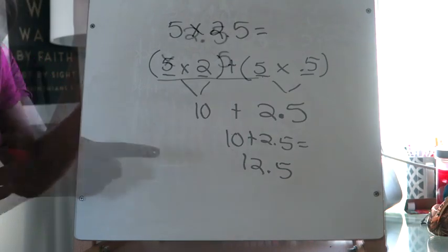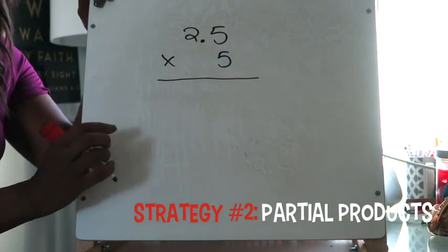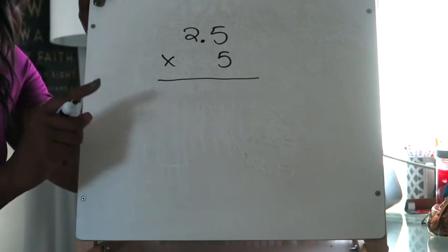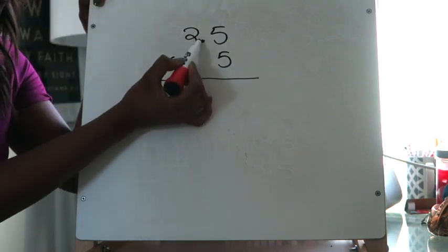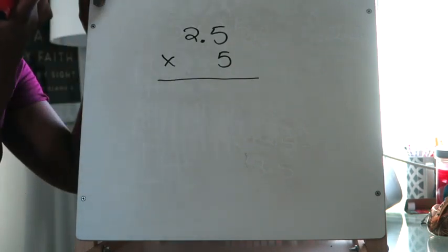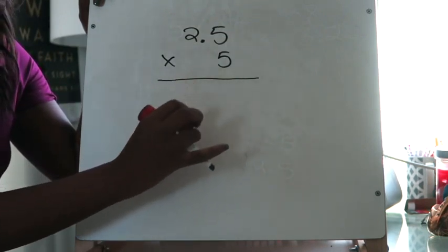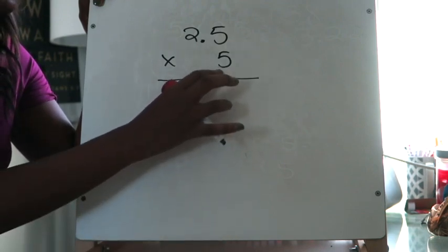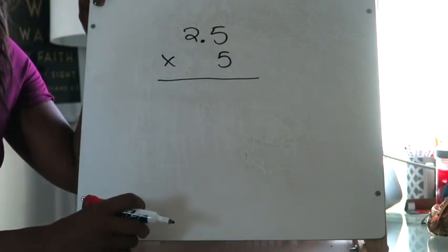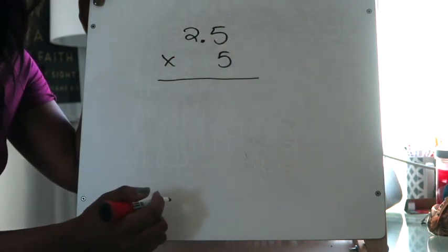Now we have the same problem — 2 and 5 tenths times 5 — and we're going to use partial products to find the answer. One thing I want to make very clear: some of you will be tempted to see the decimal point and just bring it down. That is not what we do when multiplying a decimal by a whole number — never do that. With partial products, we take the number it's being multiplied by and multiply it by each place value position separately, then add those partial products.